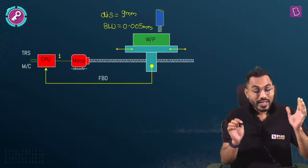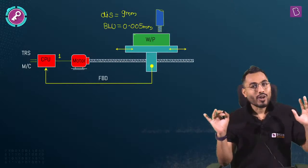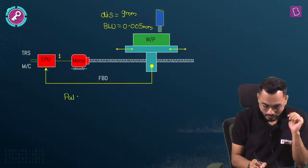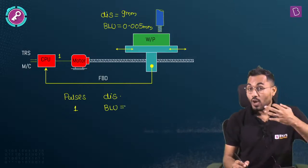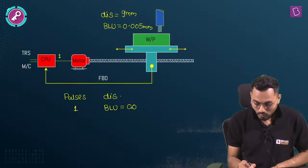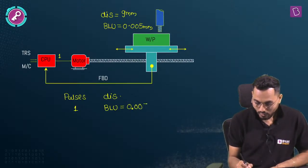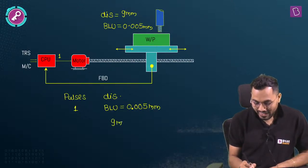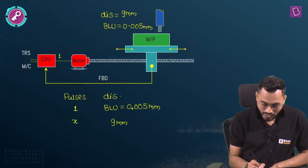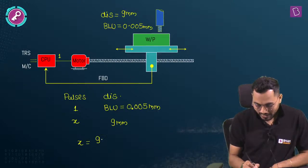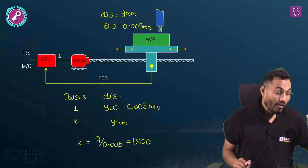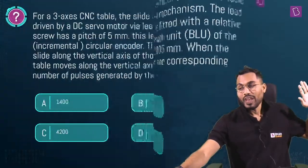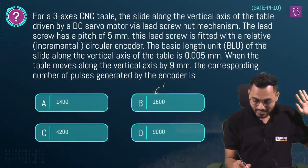Direct relation: one electrical pulse → table travels BLU = 0.005 mm. For 9 mm: number of pulses = 9 ÷ 0.005 = 1800 pulses. Kiran Kumar and Vijayasai are correct — 1800 electrical pulses are required. Option B is the correct answer.